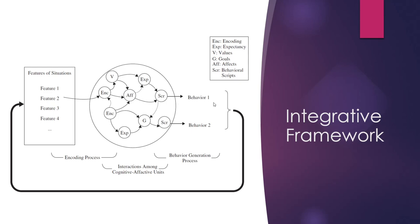According to Mischel, before you decide how you're going to behave in a certain situation, first you process it — you think about it. Behavioral scripts, for example, refer to certain patterns we follow depending on the situation. When you're praying, you're supposed to be quiet — that's your behavioral script. But when you are playing outside with your friends as children, then you're very loud and sociable — that is your script in that situation.